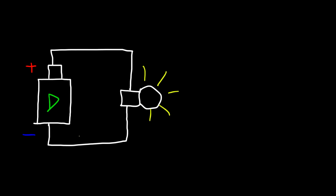What exactly is conventional current? Here's a picture of a D-size battery with a positive terminal and a negative terminal. We connect it to a small light bulb with a wire from the positive terminal and another from the negative terminal. Once we complete the circuit, the light bulb turns on. Electrons from the negative terminal flow towards the positive terminal — metals conduct electricity via these negatively charged particles called electrons, which are free to move in the metal.